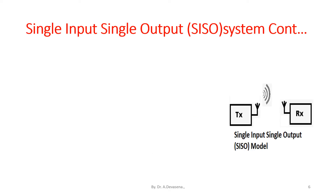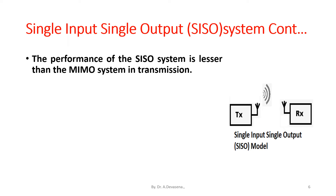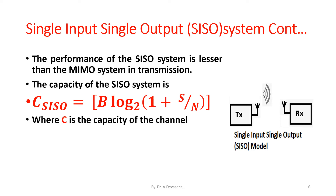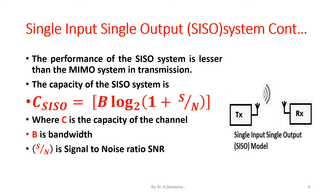The signal Y is received at the receiver end and demodulated. The performance of the SISO system is lesser than the MIMO system in transmission. The capacity of the SISO system is: C_SISO = B × log₂(1 + S/N), where C is the capacity, B is the bandwidth, and S/N is the signal to noise ratio (SNR).